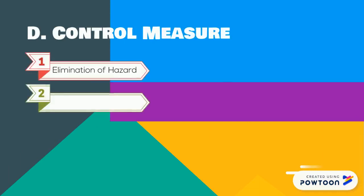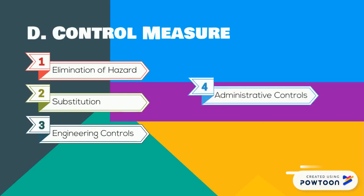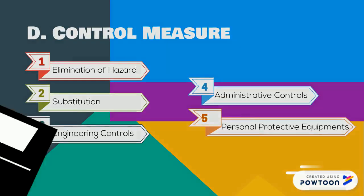The risk control measures are ranked in decreasing order of effectiveness, starting with elimination of hazards, followed by substitution, engineering controls, administrative controls, and finally personal protective equipment.